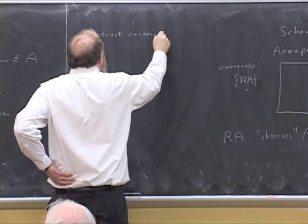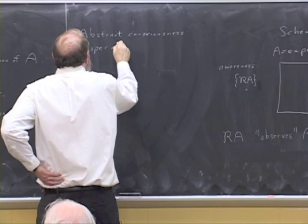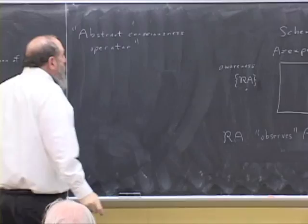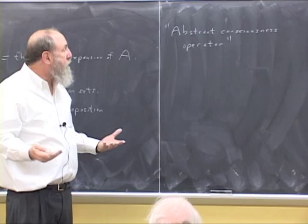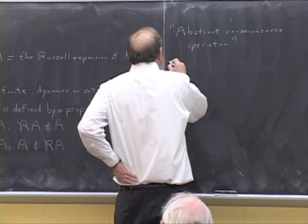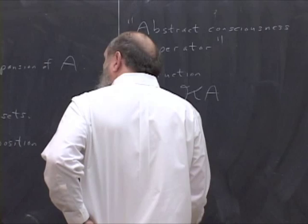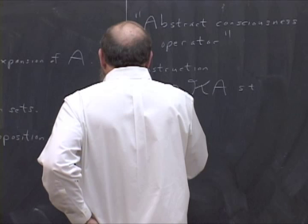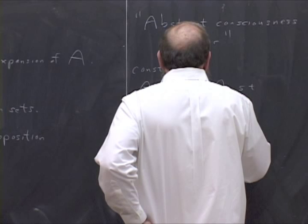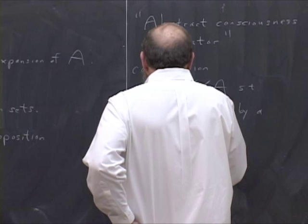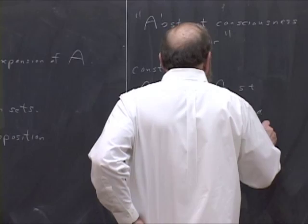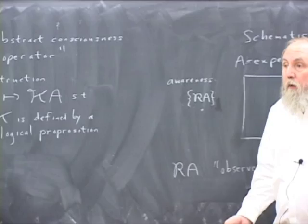So it's an abstract consciousness operator, which is only to be taken within the context of this elementary model. So it would be a construction on sets such that K is defined by a logical proposition. And of course, here, Mark's question is relevant because you have to know what do you mean by a logical proposition.